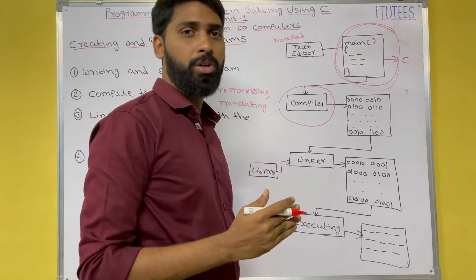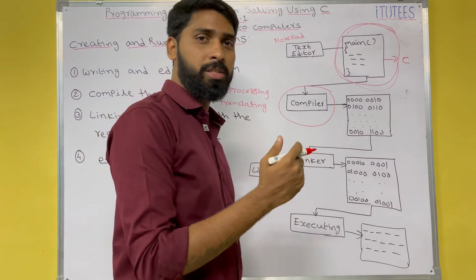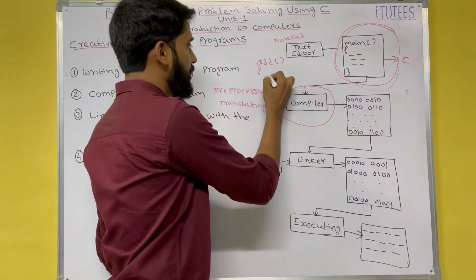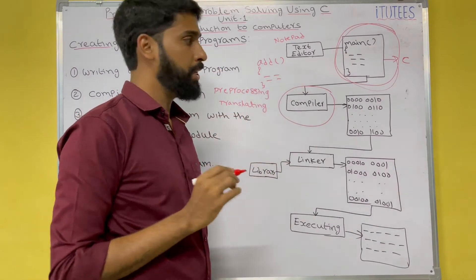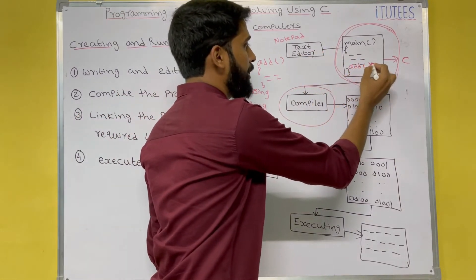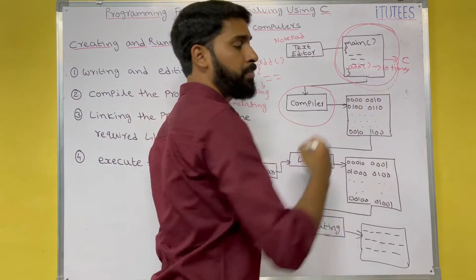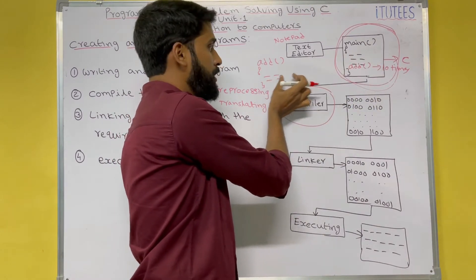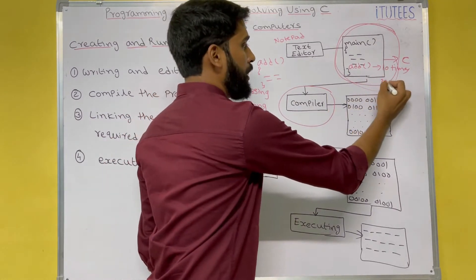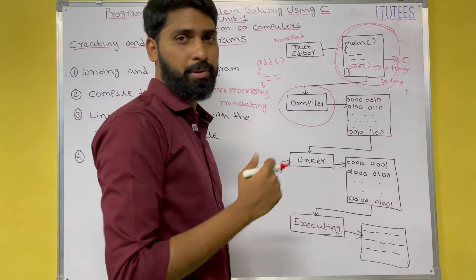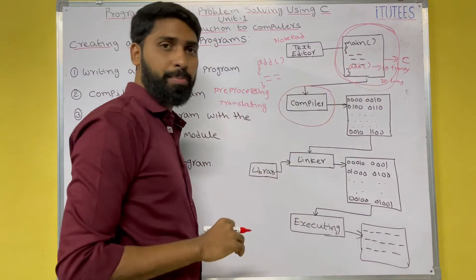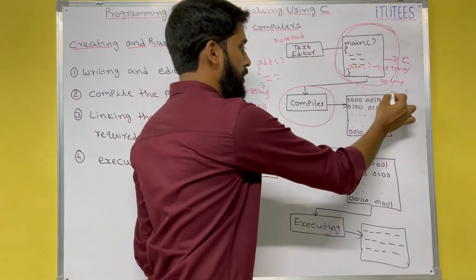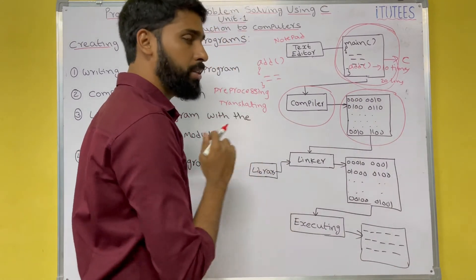What is pre-processing? In your program, if you are using any functions, those functions will be replaced with their definitions. For example, if this is the add function written as two instructions, and in your program you call add 10 times, then add is replaced with its definition — those two lines are placed in place of each call. So 20 lines will be appended. That is pre-processing. After that, the entire program is translated into machine language instructions.